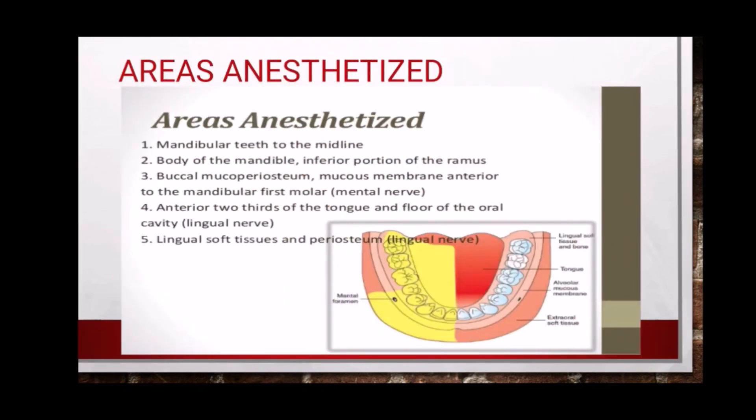The areas anesthetized are mandibular teeth to the midline, body of the mandible, inferior portion of the ramus, buccal mucoperiosteum and mucous membrane anterior to the mandibular first molar, and the anterior two-thirds of the tongue and floor of the oral cavity if the lingual nerve is anesthetized.